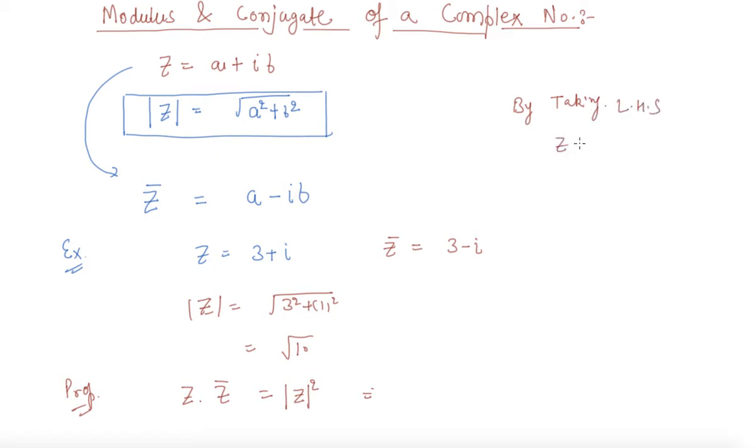So it is z into z bar. So what is z? Let's say a plus iota times b. And what is z bar? a minus iota b. So if I multiply this, this is a square plus iota ab minus iota ab minus iota square b square. So it is coming out to be, iota square is minus 1, so this is a square plus b square.